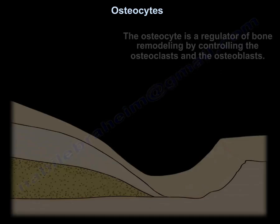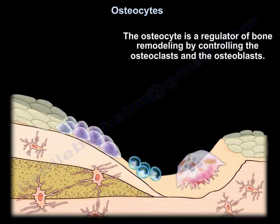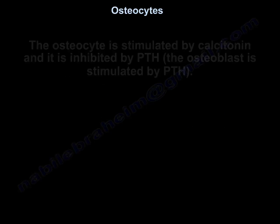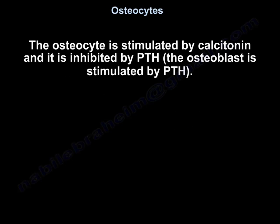The osteocyte is a regulator of bone remodeling by controlling the osteoblast and the osteoclast. The osteocyte is stimulated by calcitonin and inhibited by PTH, whereas the osteoblast is stimulated by PTH.